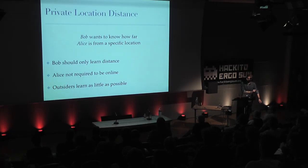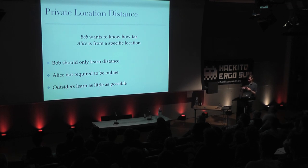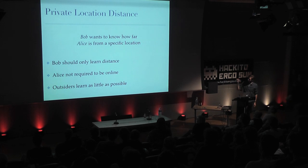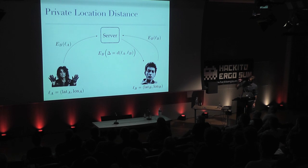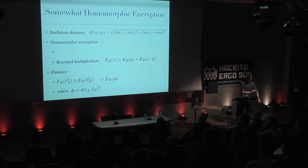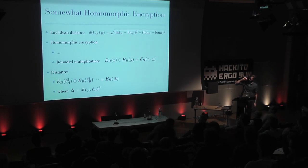The second demo: what if you actually want to know how far someone is from a specific point? Here again, we don't want to reveal the exact location — just something like 'he's five minutes away, not where he is.' Bob should learn the distance, Alice is not required to be online, and outsiders should learn as little as possible. The scheme looks more or less the same; the only difference is the computation the server has to do is slightly different. Instead of a geohash, the distance is now the typical Euclidean distance.